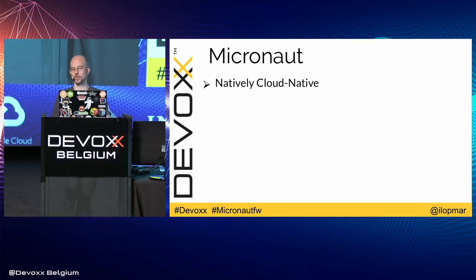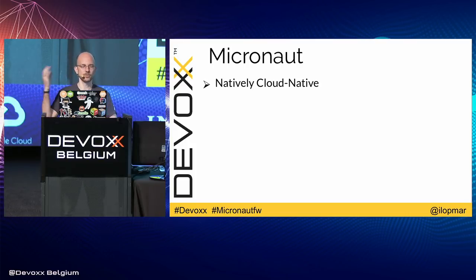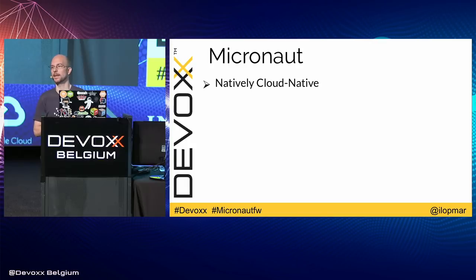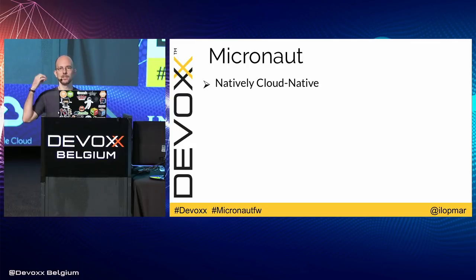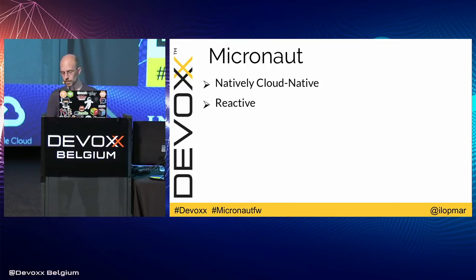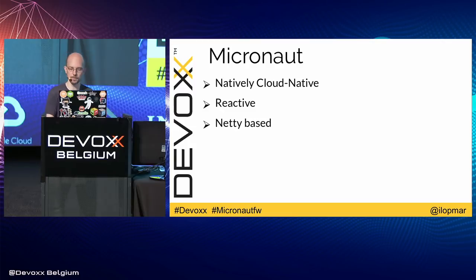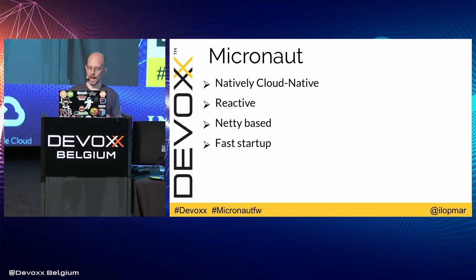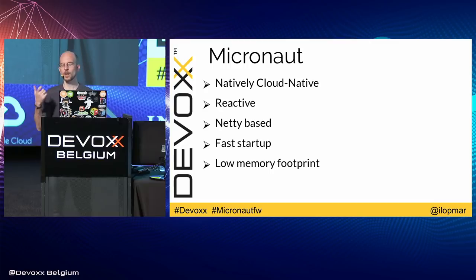Micronaut is natively cloud-native because it's a framework developed from the ground up in 2017 and 2018. We talk about microservices now — we deploy on the cloud and want features out of the box like service discovery, distributed configuration, distributed tracing, executable jars, and Docker images. It's also a reactive framework based on Netty, giving you really fast startup times and a very low memory footprint because you don't need to load everything at startup.